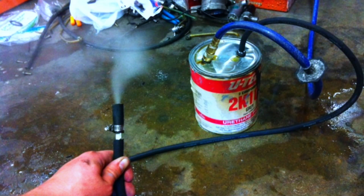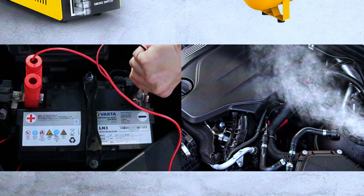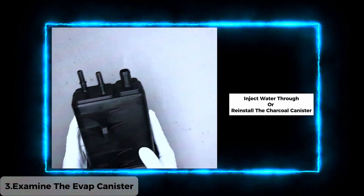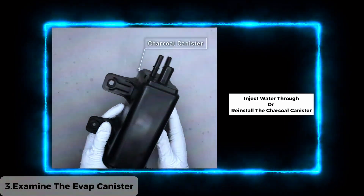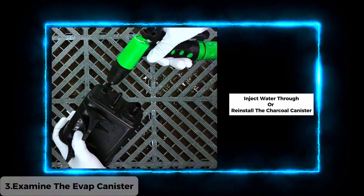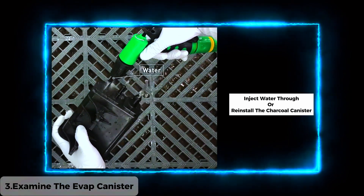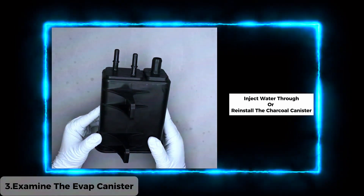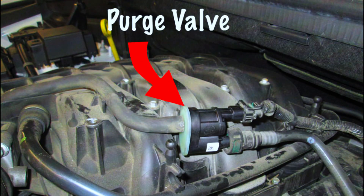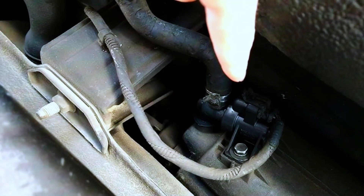Use a smoke machine — a smoke machine can help you locate the exact spot of the leak. This is especially useful if the leak is hard to find. Examine the evap canister: if the problem isn't with the hoses or gas cap, the charcoal canister might be faulty. This component can get saturated with fuel vapors over time and need replacement; make sure to follow your vehicle's service manual for proper installation. Test the valves: use a diagnostic tool to test the purge and vent valves — if they're defective, replace them.